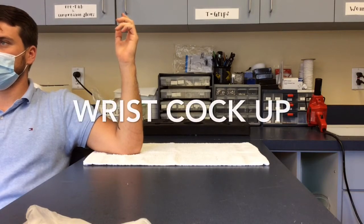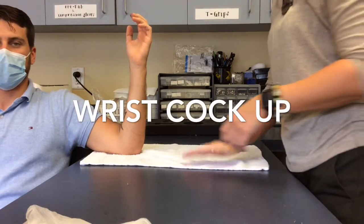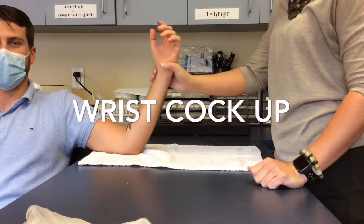This orthosis is a wrist cock-up made out of delta cast. Some of the materials that you will need: